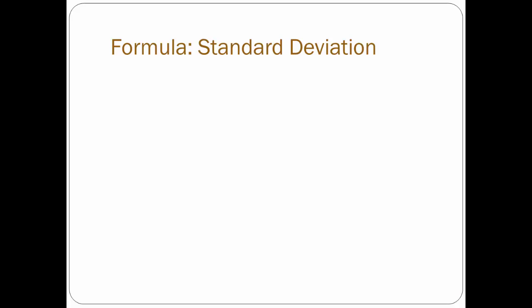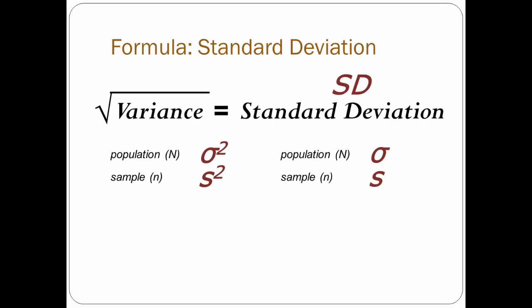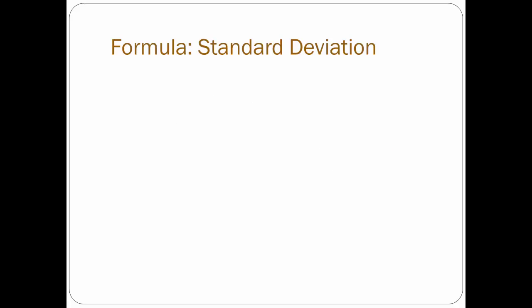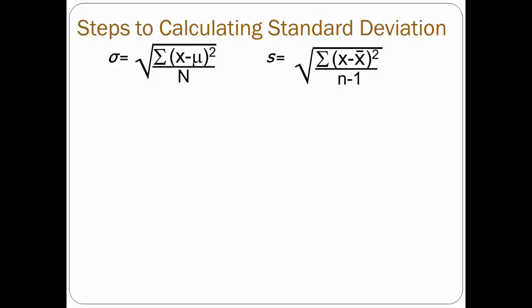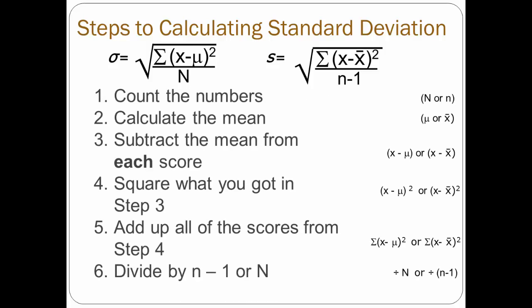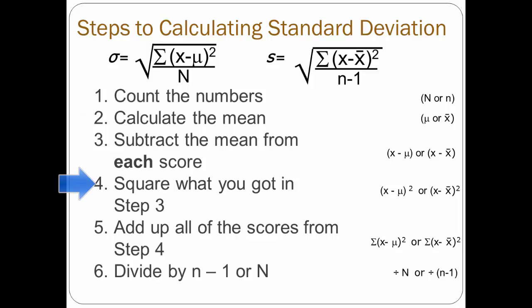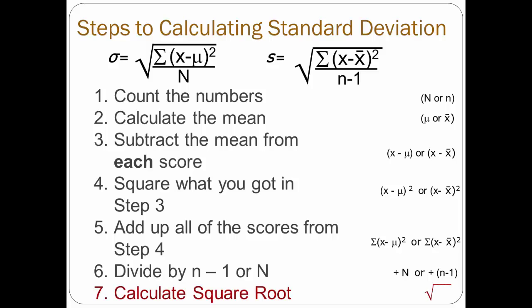Now let's take one more step to calculate standard deviation. If you recall from earlier, standard deviation is the square root of variance, so the formula for standard deviation is the same as the one for variance, but just the square root of it. The first steps to calculating standard deviation are identical to calculating variance: count the numbers, calculate the mean, calculate the differences between each score and the mean, square those deviations, sum the results, and then divide by either n minus 1 for a sample or n for a population. You'll end up with variance, and then you just take the square root of that to get the standard deviation.